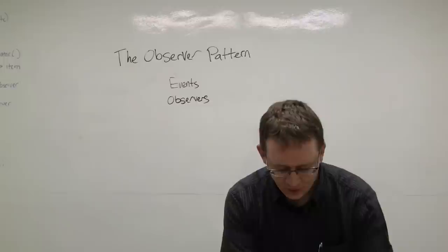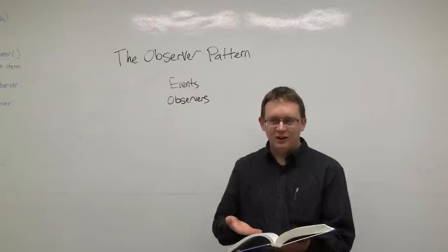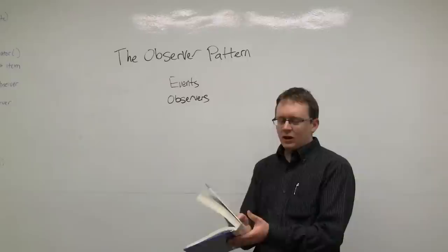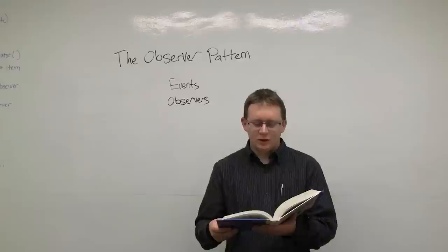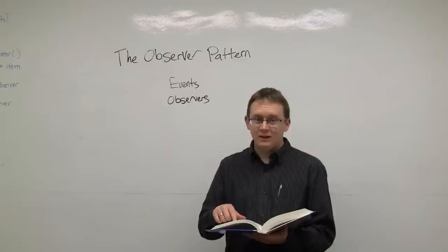Since this is one of the classical patterns described in this book, I'll read from it — Design Patterns, page 293, Observer. It defines a one-to-many dependency between objects so that when one object changes state, all its dependents are notified and updated automatically.